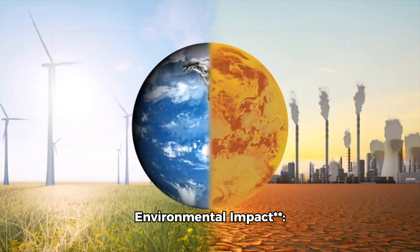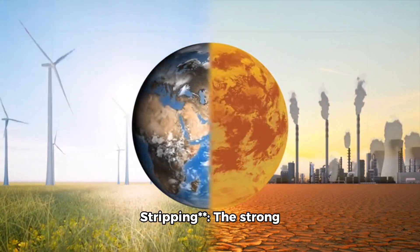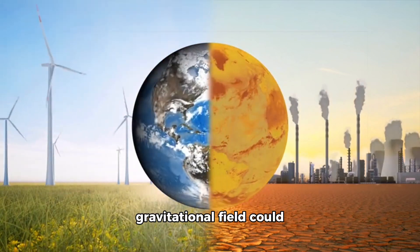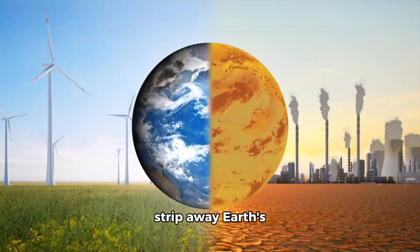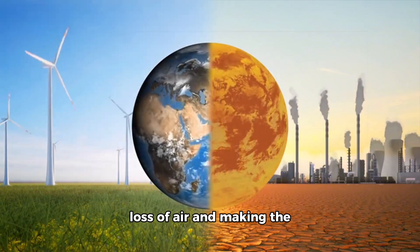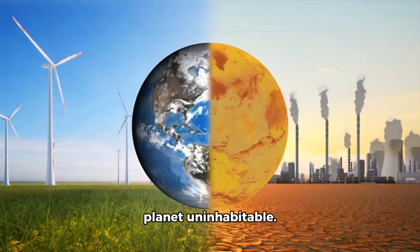Atmospheric and environmental impact: atmospheric stripping. The strong gravitational field could strip away Earth's atmosphere, leading to the loss of air and making the planet uninhabitable.